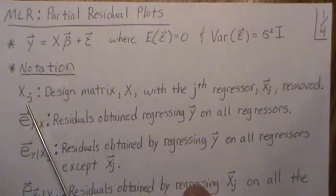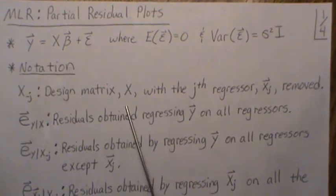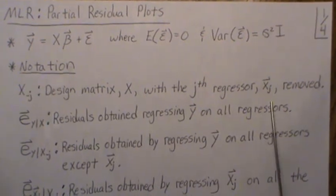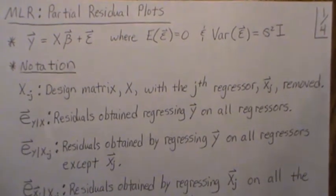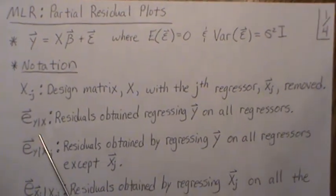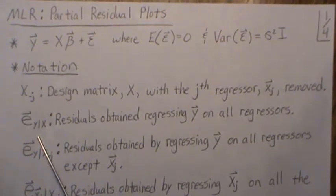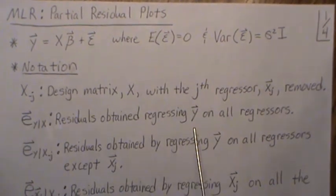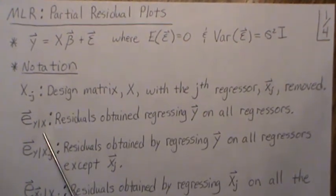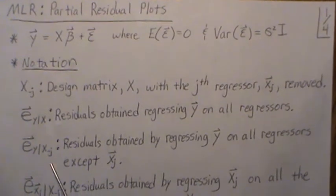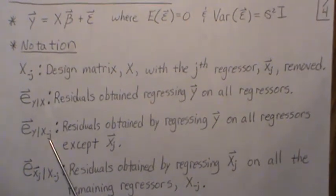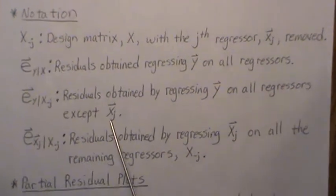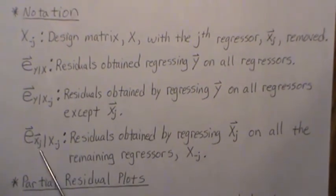Let's develop some notation. X minus j is the design matrix with the jth regressor removed — think of it as the jth column being taken out. e(y|x) are the residuals obtained from regressing y onto all the x's. e(y|x_{-j}) are the residuals from regressing y onto all regressors except for the jth. And e(xj|x_{-j}) is from regressing the jth regressor onto all the other regressor variables.